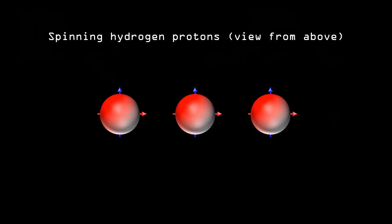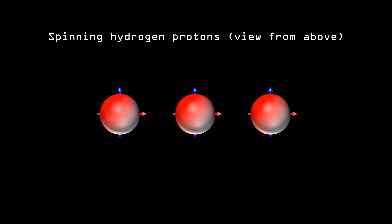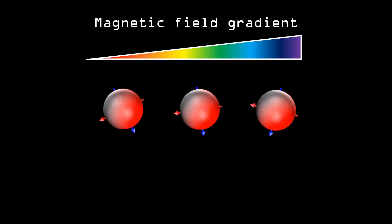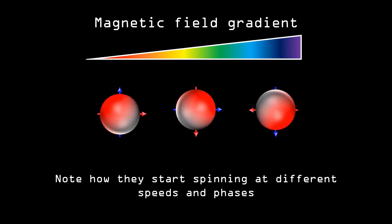First, let's take a look at an example where hydrogen atoms do not move. When performing a DTI scan, a gradient is added to the magnetic field. As a consequence, the synchronized spinning of the protons is disrupted, and depending on the magnetic field, some protons spin faster and some others spin slower.